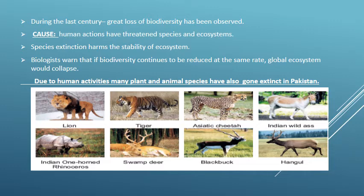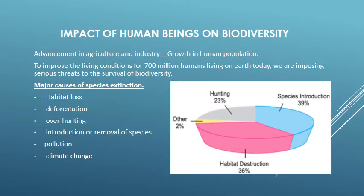Due to human activities, many plant and animal species have also gone extinct in Pakistan. Different animals have vanished from their wildlife habitats in Pakistan. Advancement in agriculture and industry has resulted in growth in human population. To improve living conditions for the 700 million humans on earth today, we are imposing serious threats to the survival of biodiversity. Major causes of species extinction are habitat loss, deforestation, overhunting, introduction or removal of species, pollution, and climatic change. The pie chart shows the percentage impact of different human activities on biodiversity.